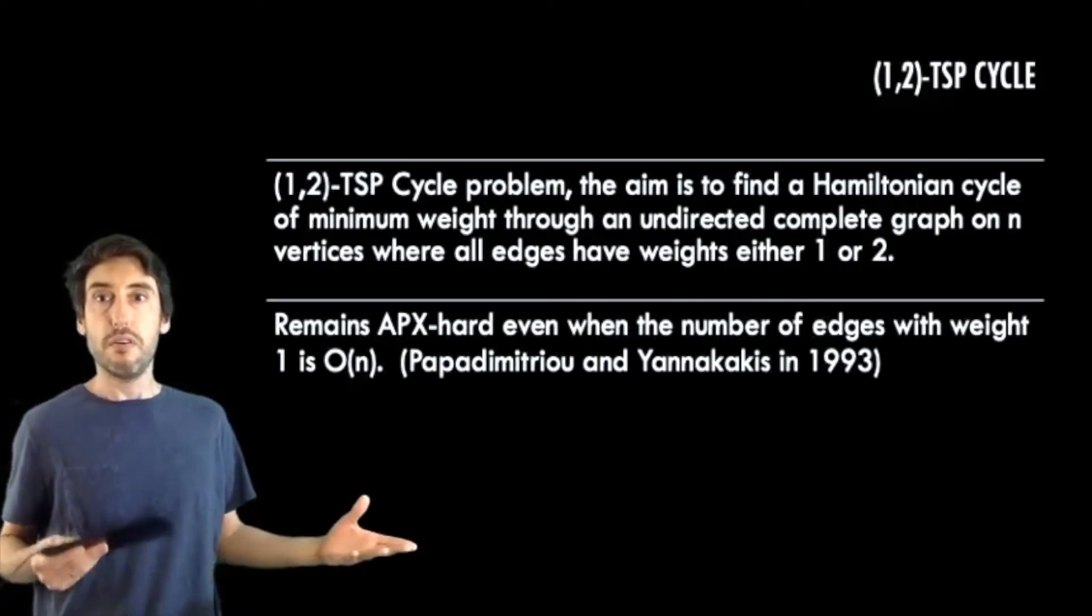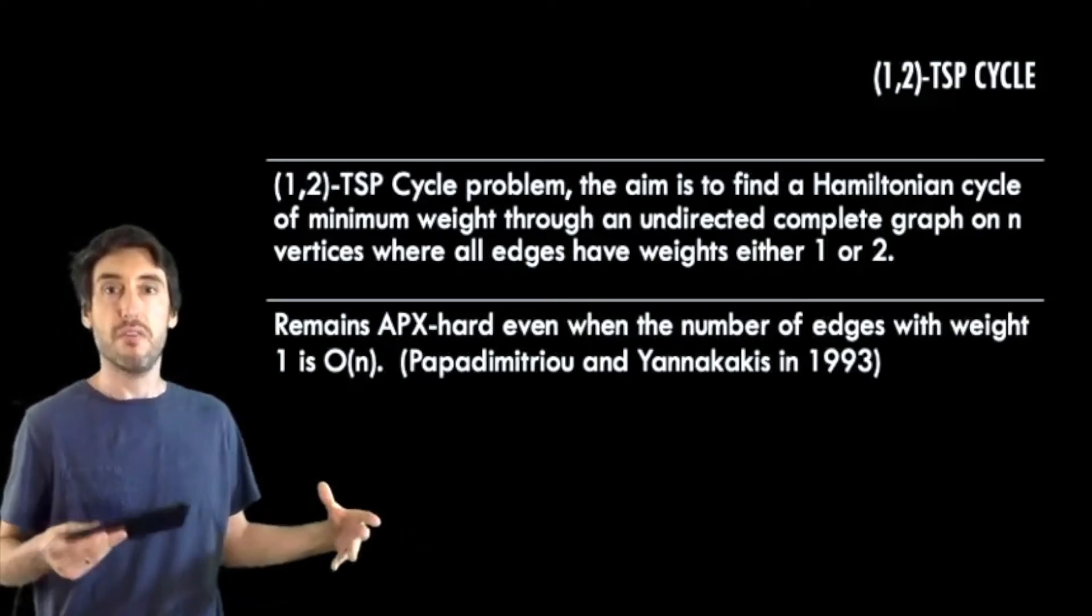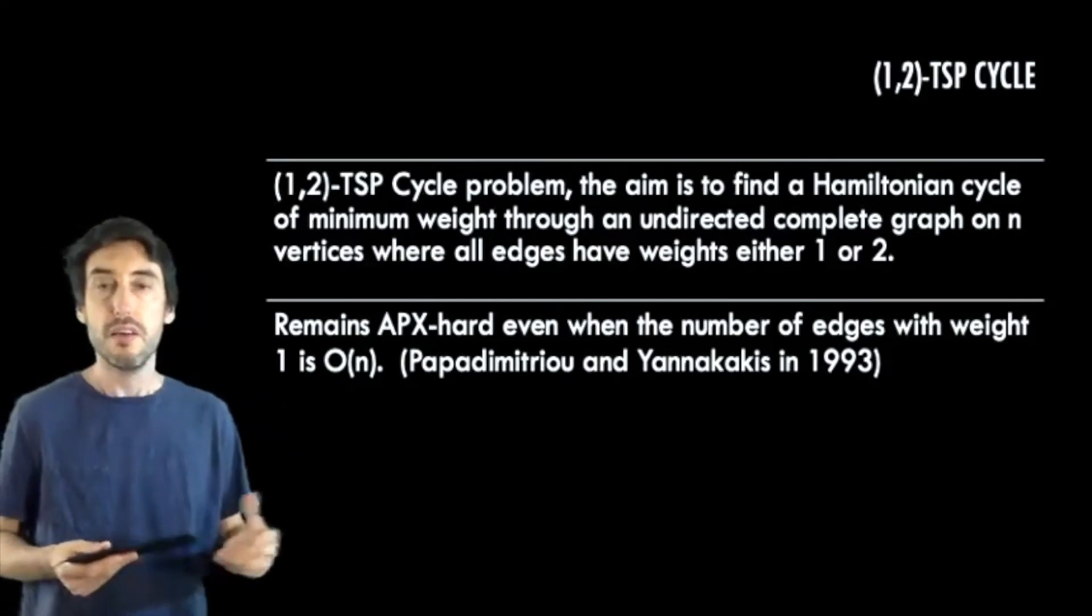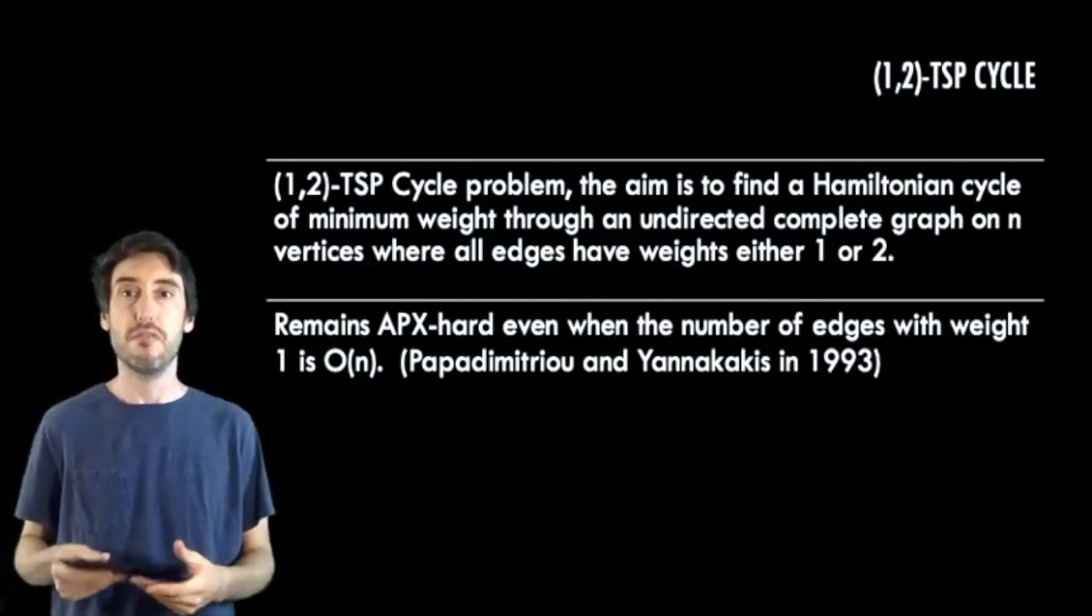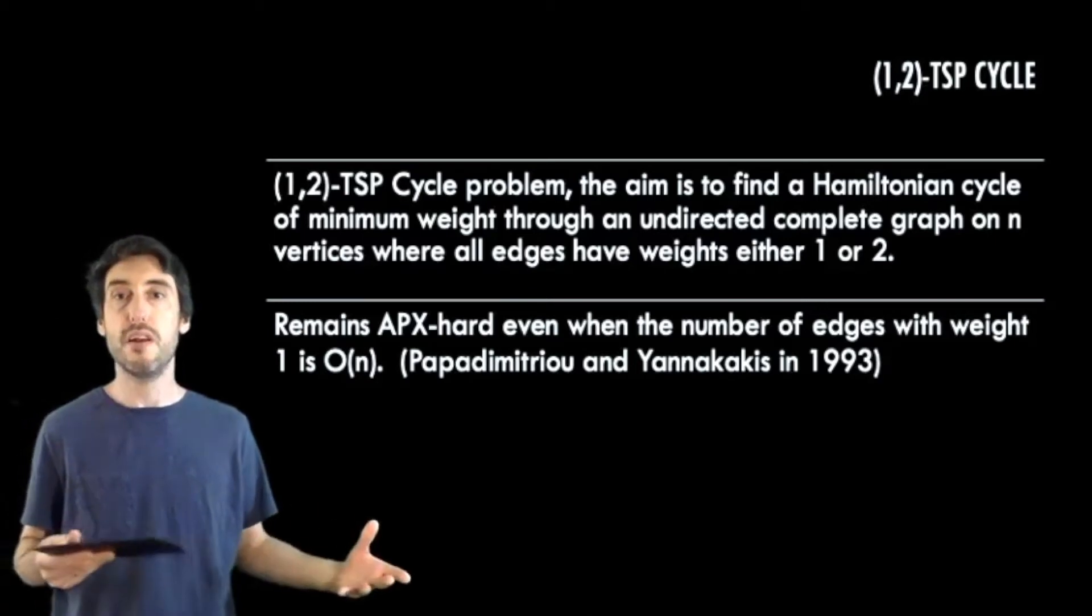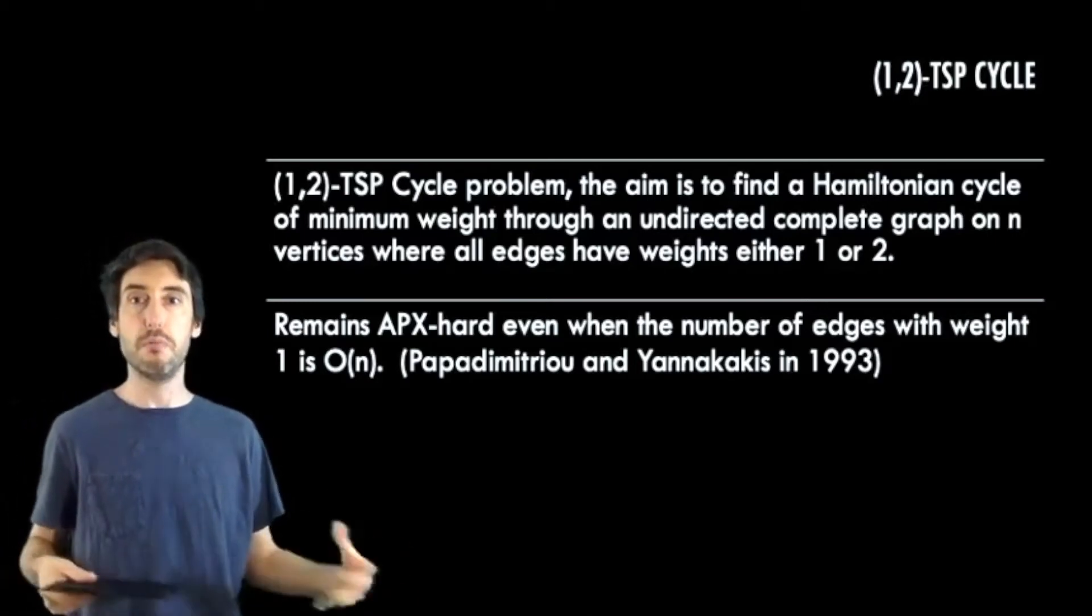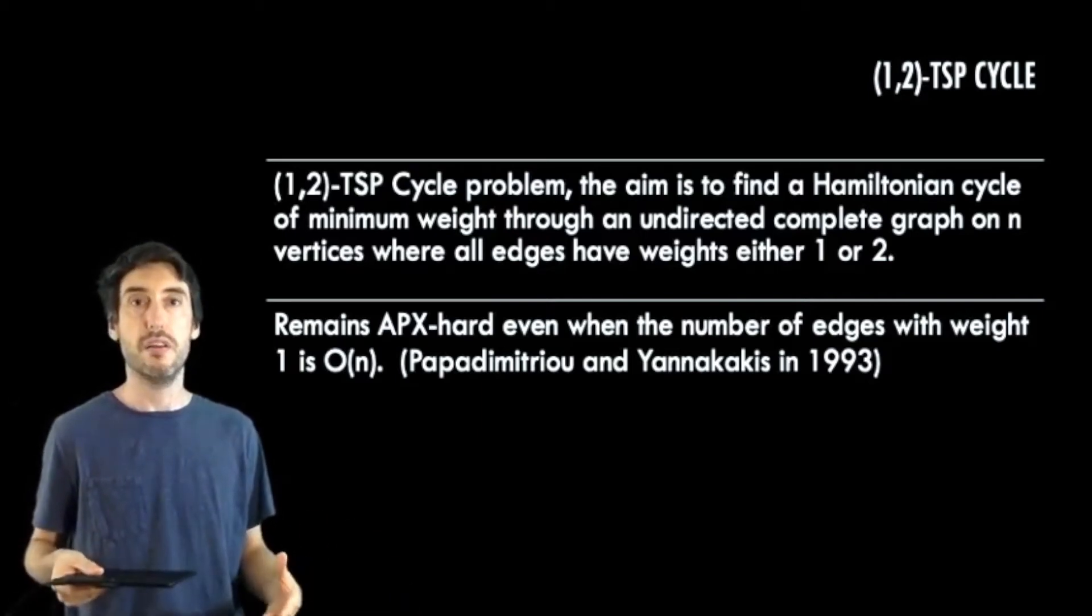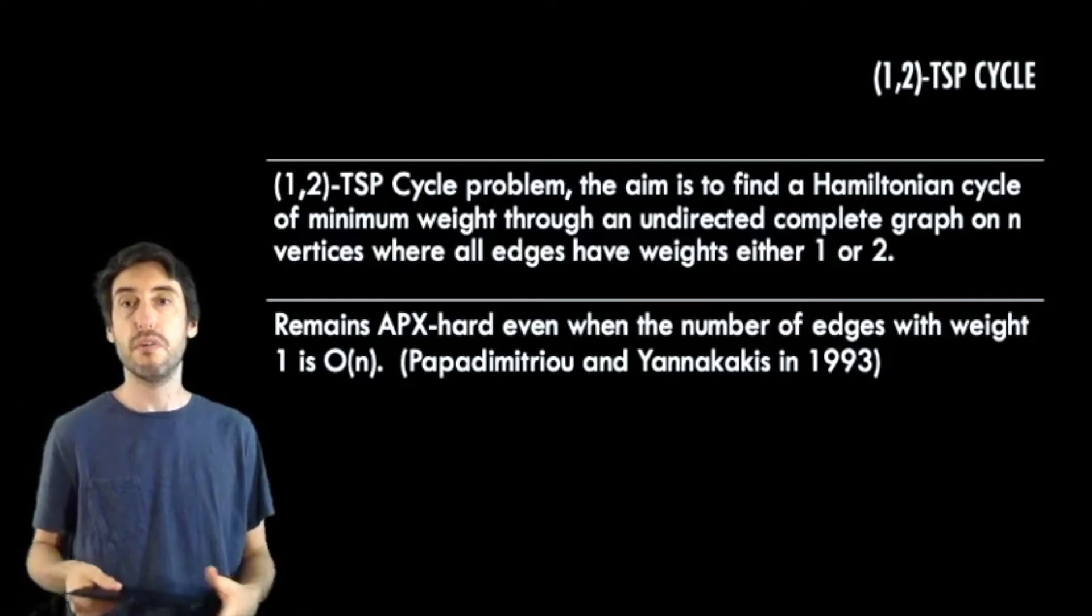So okay, so now let's look at the problem which is at the base of our hardness results. That's 1,2-TSP cycle. Given an undirected complete graph on n vertices where all edges have weights either 1 or 2, we want to try to find a Hamiltonian cycle of minimum weight in this graph. Now it's been shown to be APX hard, even in the case where the number of edges of weight 1 is big O n.